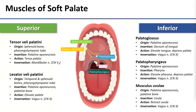Musculus uvulae is kind of a funny little muscle. Its only bony attachment is a tiny little slip that attaches it to the palatine bone. Otherwise it runs between the palatine aponeurosis and the soft tissues of the uvula. When it fires it pulls the uvula up toward the soft palate. If you want a demonstration, you can look in the mirror and say 'oh' and you can usually see it crunch up into the palate as the whole thing lifts.